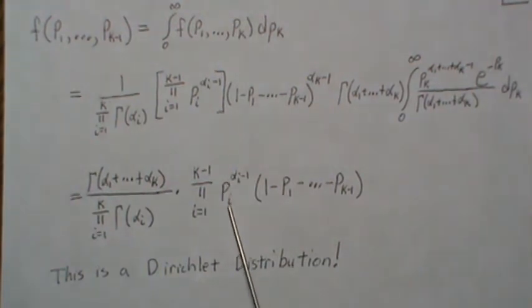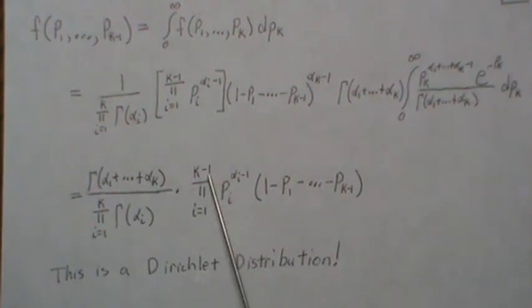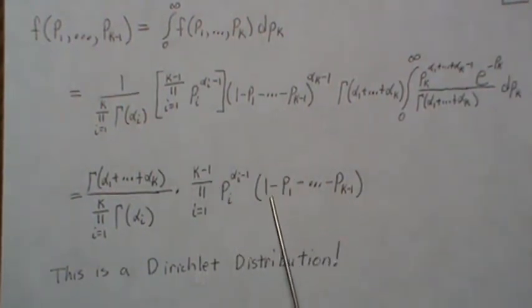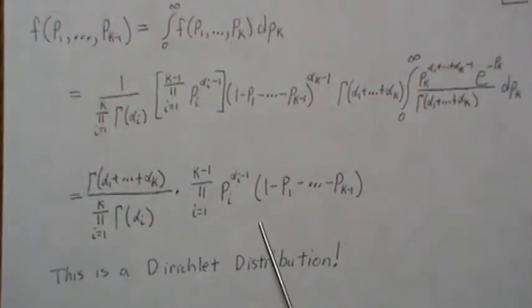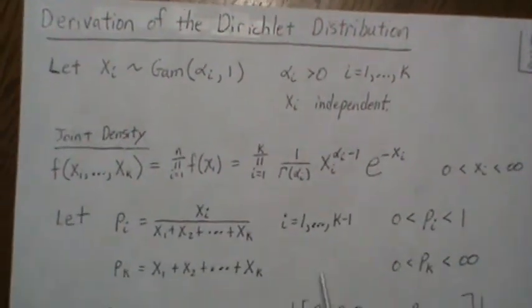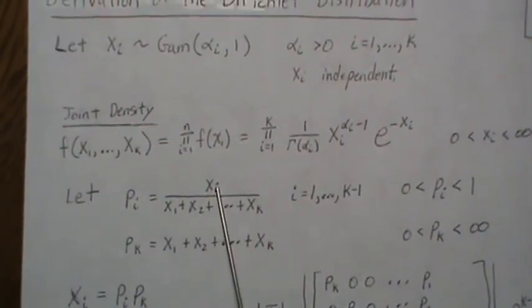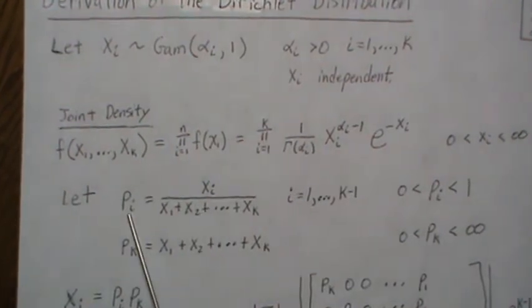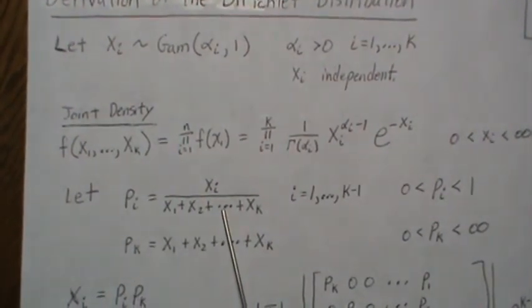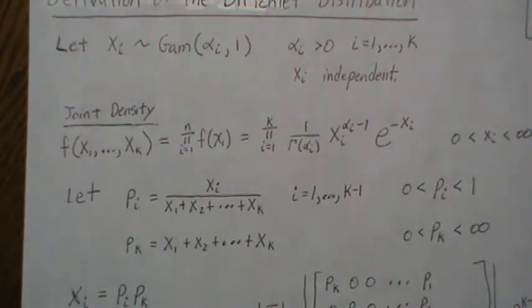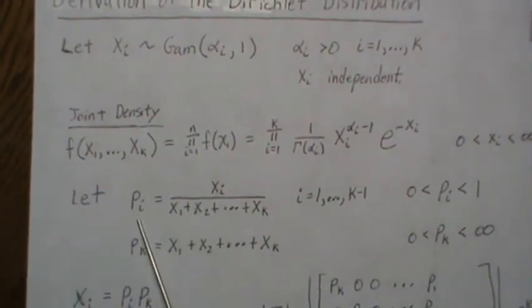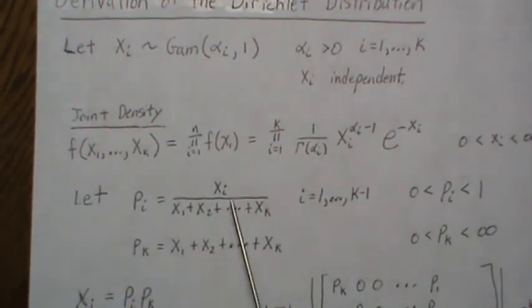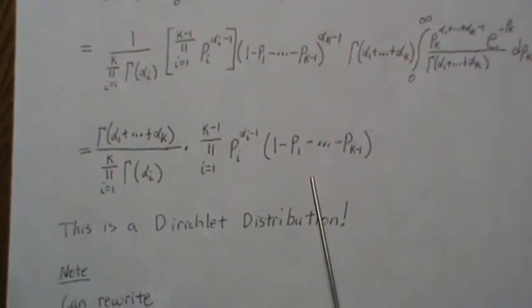And now one thing that is a requirement is that all these PIs, so P1, P2 up to PK minus 1 plus this must sum to 1. And they do, and if you go back to the original variable transformation you can see if you add up these PIs to PK minus 1 and then you add in the one minus those and they all add up to 1, so that's another requirement.